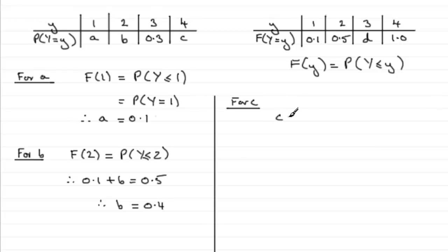So it should be okay to work out c. So to get c, it's going to be 1 minus the sum of a, b, and the 0.3. Well, a is 0.1, b is 0.4, and we can see the 3 is 0.3.